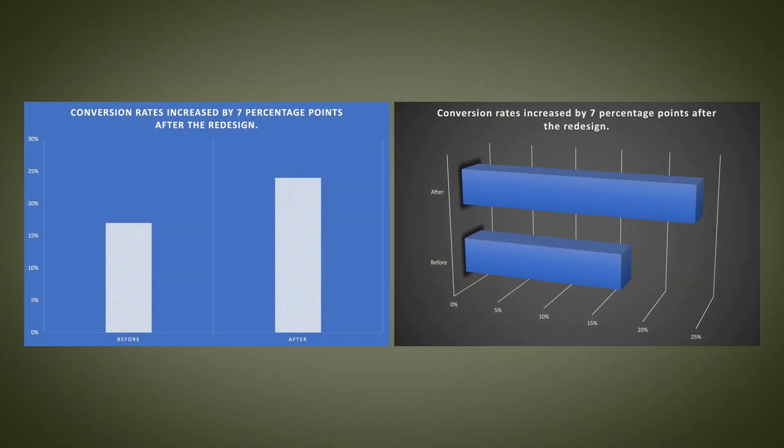All too often, I see UX professionals creating overwhelming, distracting, and sometimes downright ugly data charts. When I'm coaching people to improve their data visualizations and I see them make these mistakes, I'll often ask them about why they picked those chart styles. Sometimes people will tell me they picked those styles to make the chart look interesting. But your point is interesting enough on its own — you really don't need gaudy stripes or 3D effects to dress it up, and using those will only obscure your chart's meaning.